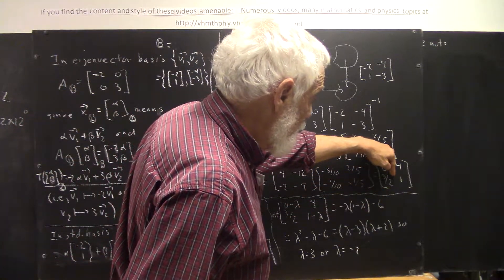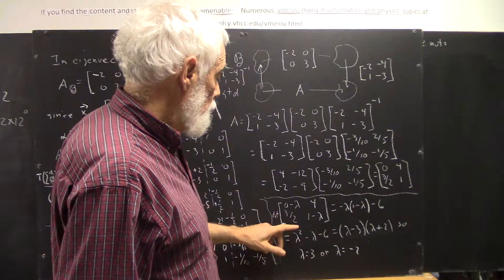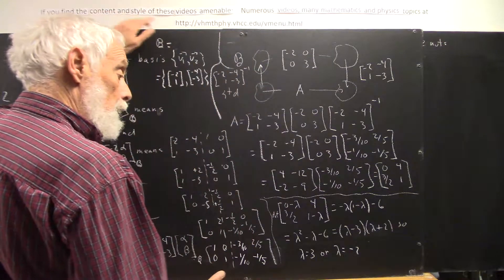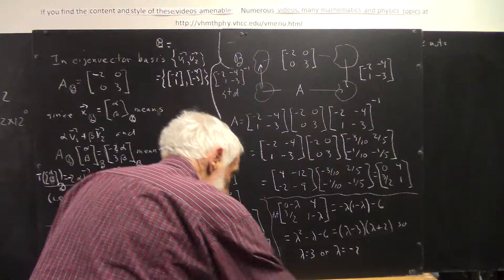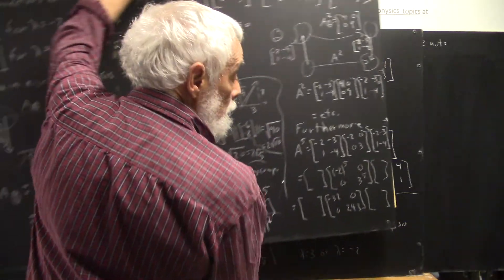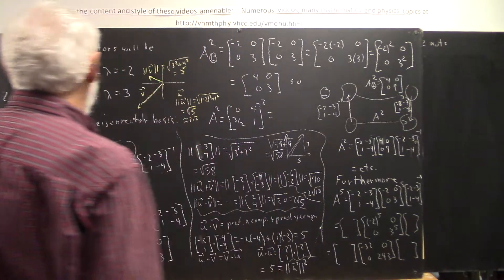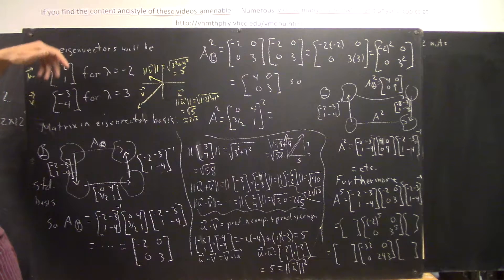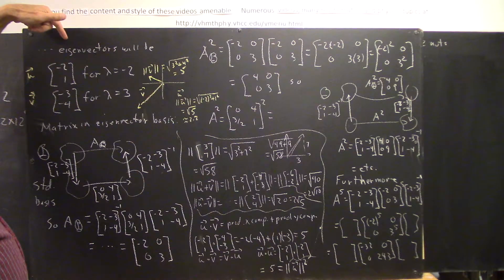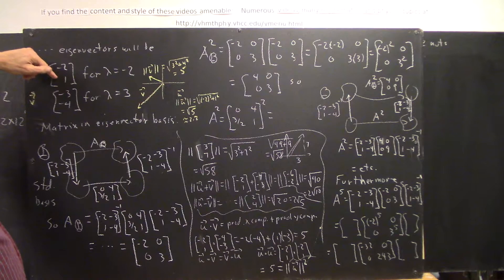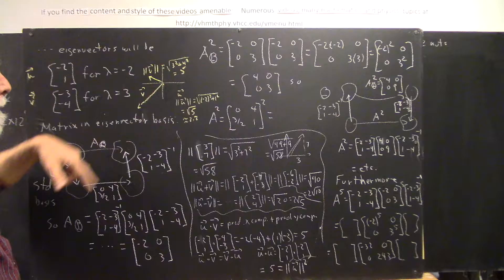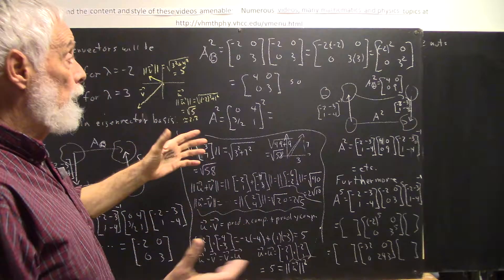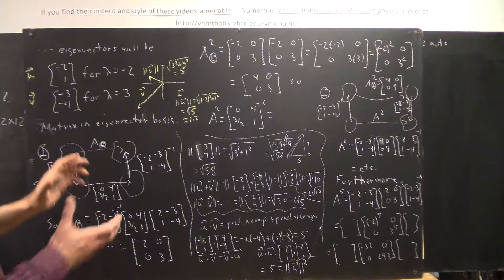We then take this matrix, pretending we haven't seen anything else. We take the determinant of the matrix that we use to find the eigenvalues. We find the eigenvalues to be 3 and negative 2. From there, we find the eigenvectors — we've been over that process, you know how to find the eigenvectors, and you've done a lot of homework finding eigenvectors. We find that the eigenvectors are these, and that this eigenvector corresponds to this eigenvalue and this one to this eigenvalue. So we can now find the matrix in the eigenvector basis — of course we already know what it's going to be, because that's where we got all this.